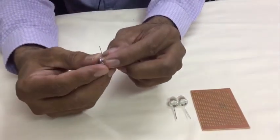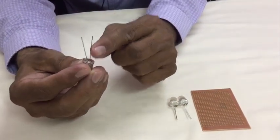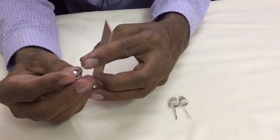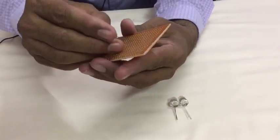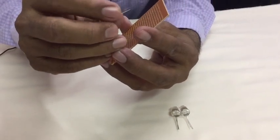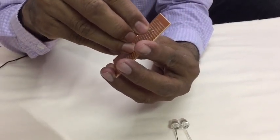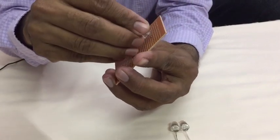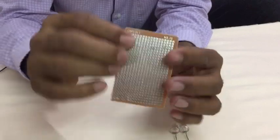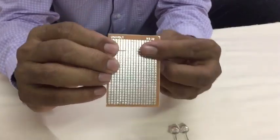Take LED. LED has two terminals, the bigger one is positive, smaller one is negative. Now take PCB, insert two terminals of LED into the PCB holes, so bigger terminal is on the right side. Fold the terminals.